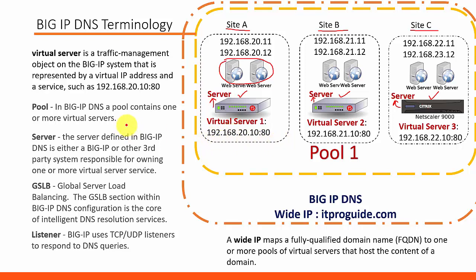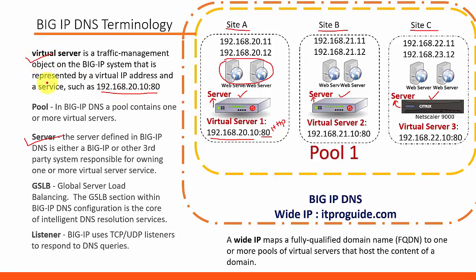The virtual IP configured in the local traffic management or third-party device, combined with the service port, is called a virtual server in Big IP DNS. For example, 192.168.20.10 is the virtual IP of the first LTM providing HTTP service on port 80. So the virtual server is 192.168.20.10 plus port 80 together.